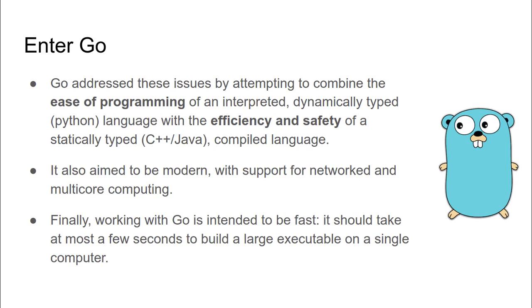Go addresses these problems by attempting to combine the ease of programming of interpreted or dynamically typed languages such as Python with the efficiency and safety of a statically typed language such as C++ and Java. Since Go came into existence after we had multi-core processors, as well as networked and cloud computing systems, Go was aimed to be very modern by keeping these new computing paradigms in mind. And finally, working with Go is intended to be fast — it can turn out large executables on a single computer within a few seconds. Great things happen when you have a bunch of intelligent people on your team.